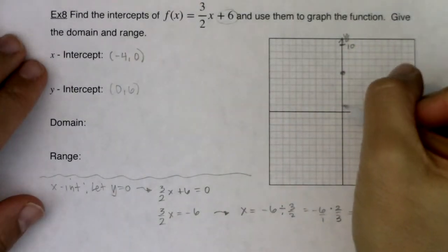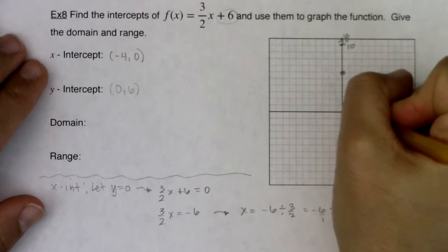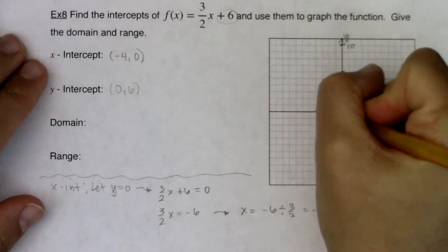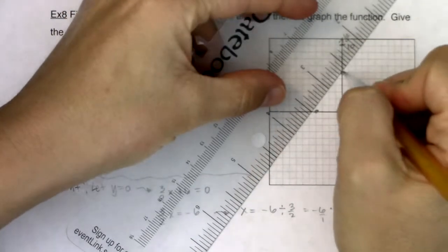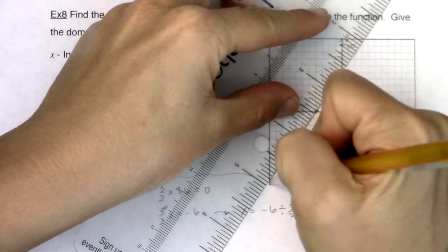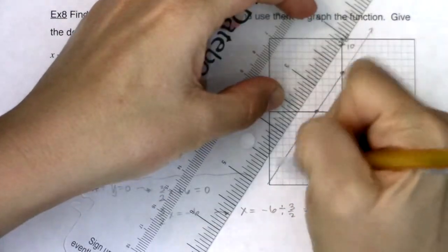All right, so let me go ahead and put my x-intercept on the graph. So one, two, three, four. So I see my two points. I only need two points to determine the equation or the graph of a line. So there we go.